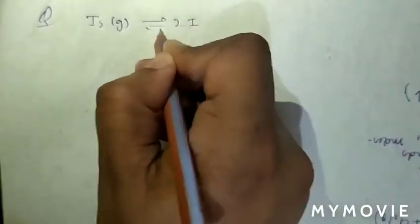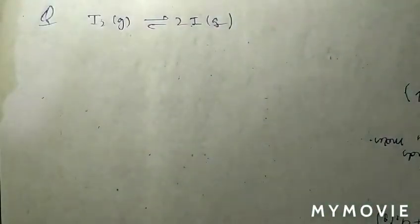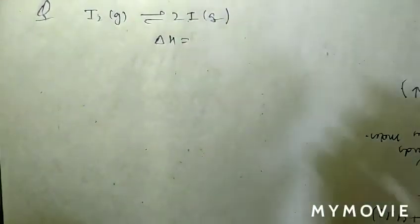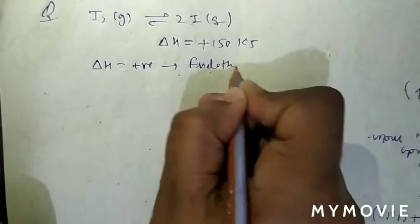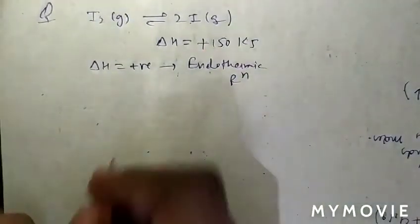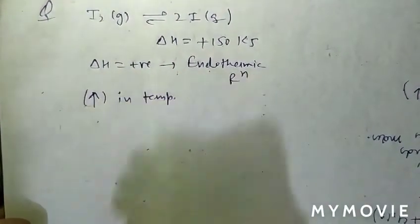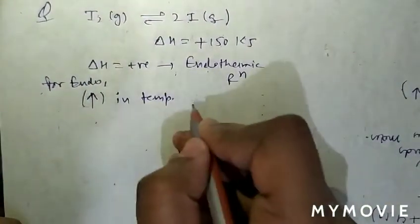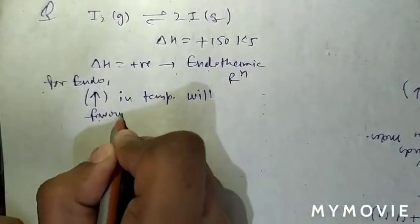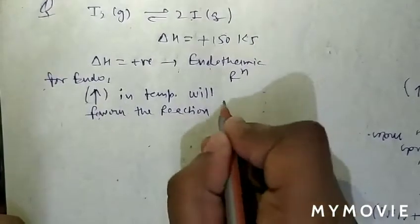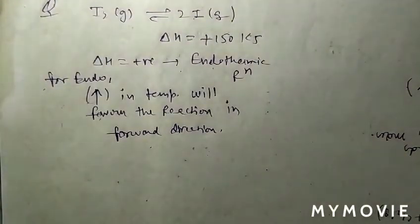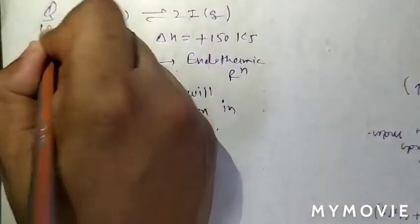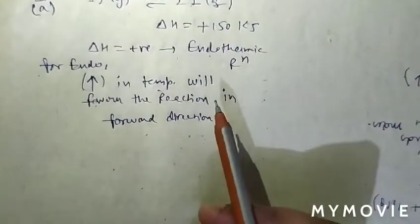Question 59: I₂(g) ⇌ 2I(g), ΔH = +150 kJ. Since ΔH is positive, this is an endothermic reaction. For an endothermic reaction, increasing temperature favors the forward direction and shifts the equilibrium forward. Question 59, option A is correct.